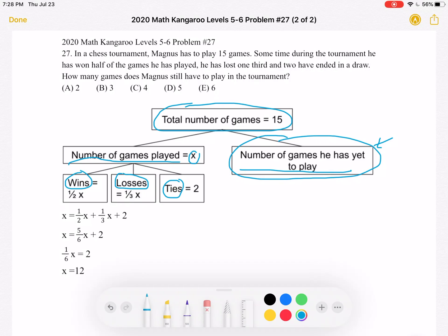And from the problem, we know that out of X games, he has won half of them. That means he has won one half of X, so his number of wins is one half X. We know that he has lost one third, so the number of losses is one third X, and we know that two have ended in a draw. So there's two ties.